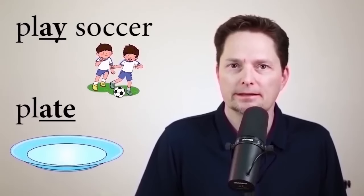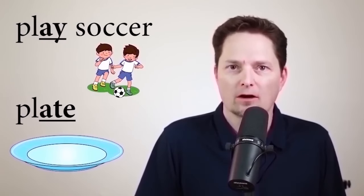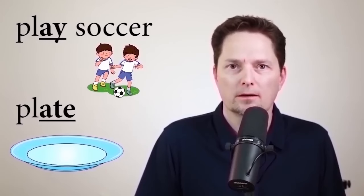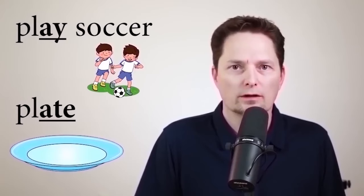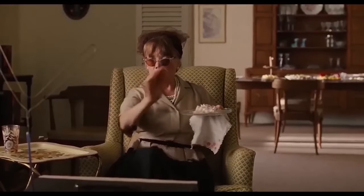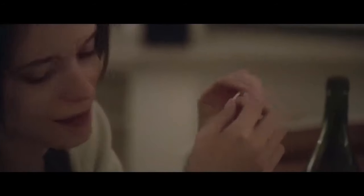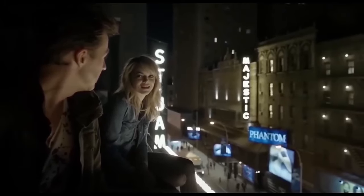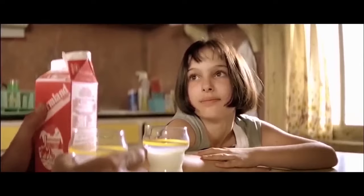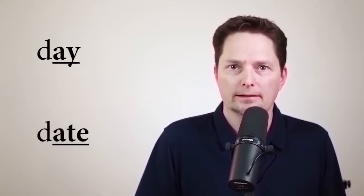And when you have a T at the end, a stop T, it makes the vowel shorter. Let's compare: play — no stop T, the vowel is longer. Compared with plate — the stop T makes the vowel shorter. They're the same long A vowel, but the stop T at the end makes it a little shorter. Listen again: play. And plate — it's shorter. Miss Baker told me to bring you a plate. Let's play a game, just me and you. Also: day — the vowel is longer. Compared with date — the stop T makes the vowel shorter.